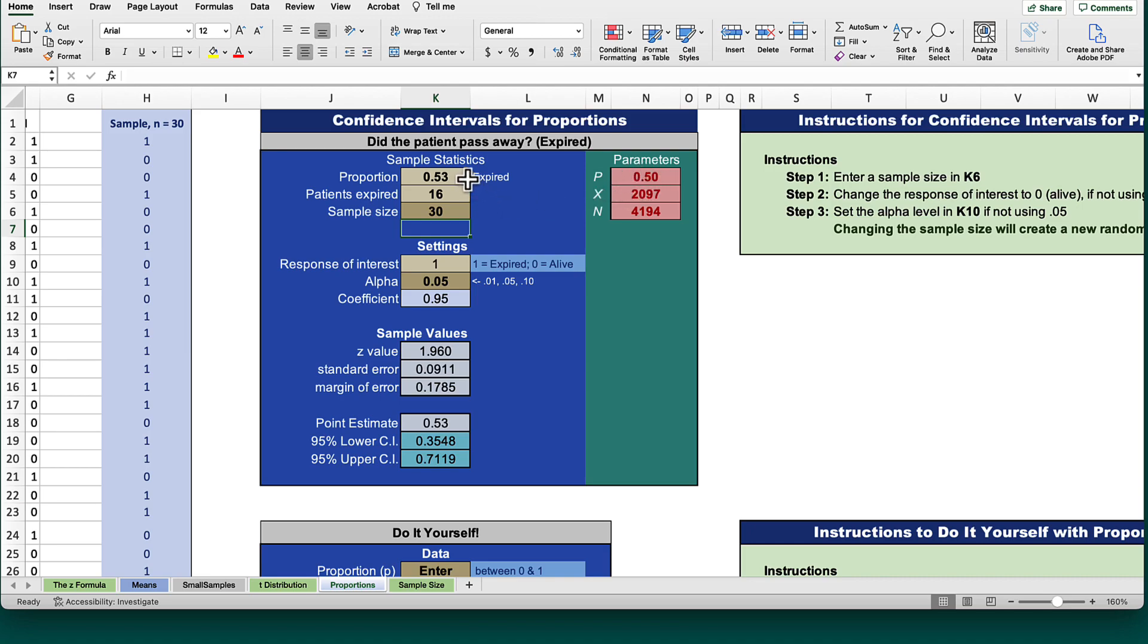To select a second sample, re-enter the number 30 for sample size. You now have a different proportion from a different sample. How close is it to the population parameter of 0.5?